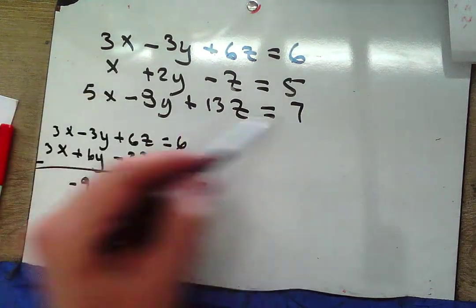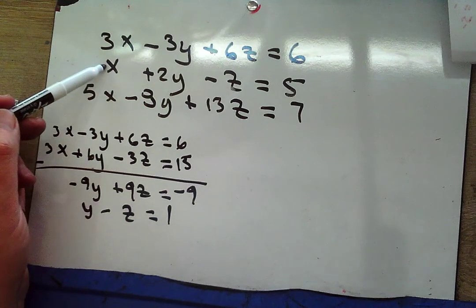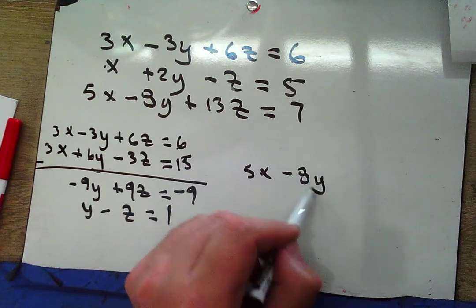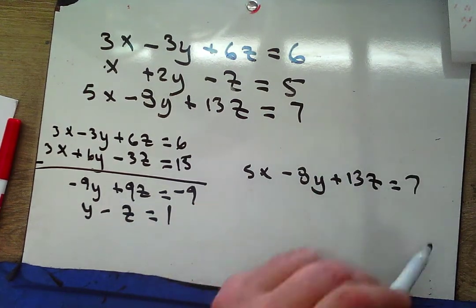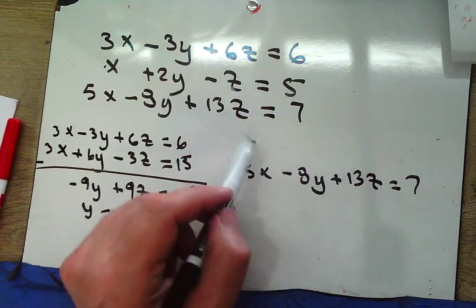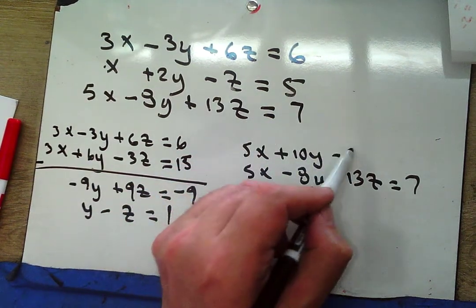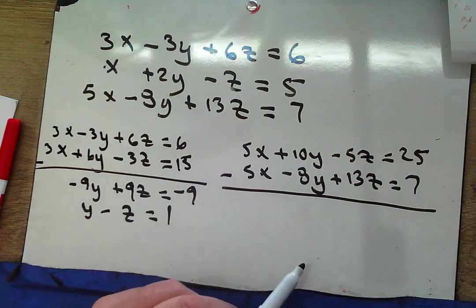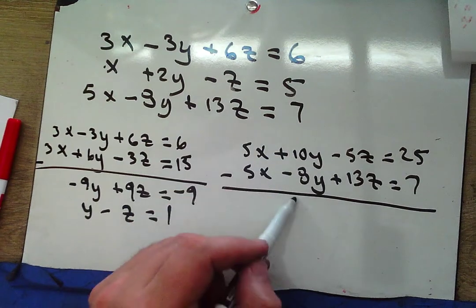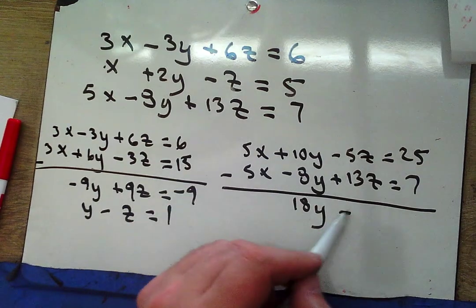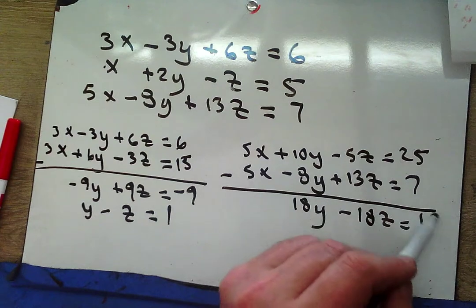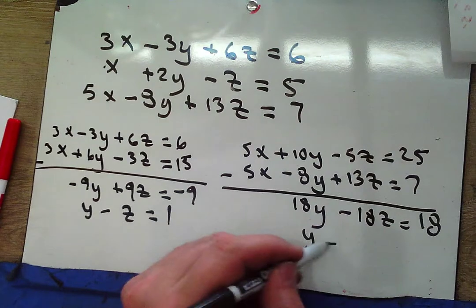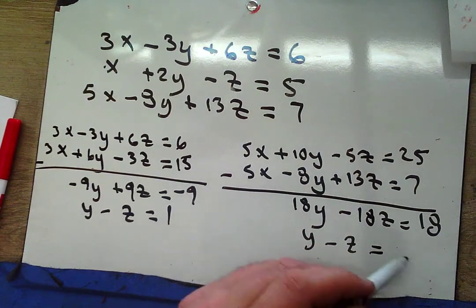Using equations two and three: multiply the second by 5 to get 5x + 10y − 5z = 25. Subtracting from 5x − 8y + 13z = 7 gives −18y + 18z = −18, which simplifies to y − z = 1. These two resulting equations are identical, giving 0 = 0 — confirming this is a parametric (infinite solution) case.